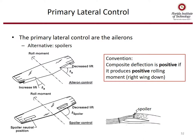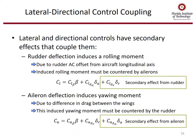In summary, C_L beta is the primary lateral static stability derivative — called the dihedral effect — and needs to be negative. The overall driver for lateral stability is C_L beta. The primary lateral controls are the ailerons; an alternate type is spoilers. Convention is that composite deflection is positive if it produces a positive rolling moment or right wing down. Lateral and directional control are coupled: rudder deflection induces a rolling moment that must be countered by ailerons, and aileron deflection induces a yawing moment that must be countered by the rudder.